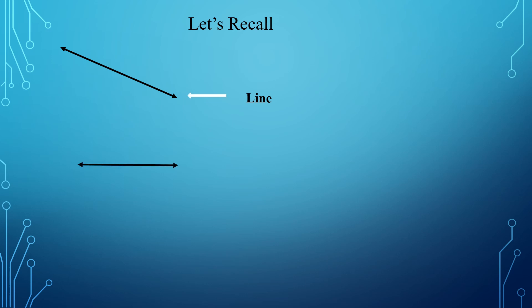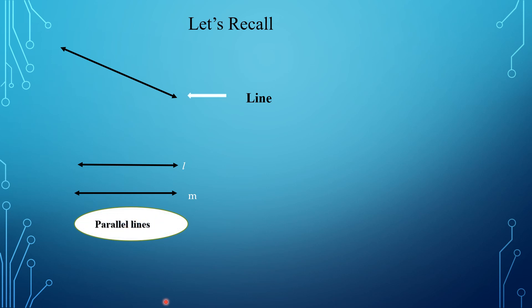I have drawn two lines, that is line L and line M. Line L and line M are equidistant — they are equal distance — and both lines do not intersect each other, or they do not meet. So what are such lines called? Such lines are called parallel lines.